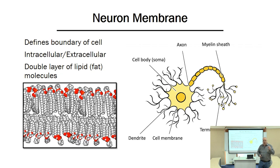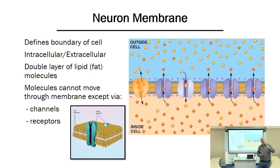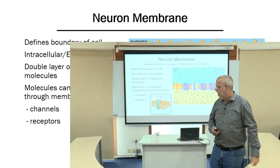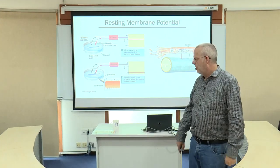The important part is that molecules cannot flow directly back and forth across that membrane. Rather, there must be channels and receptors — think of just a hollow tube. Channels and receptors have to be embedded within the membrane, and it's only through these channels and receptors that molecules can flow into or out of the neuron itself.